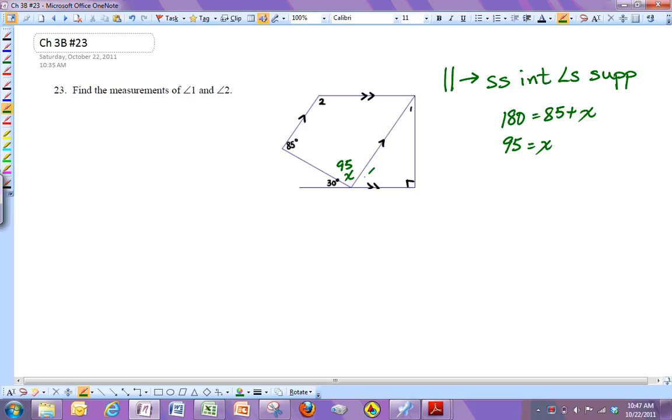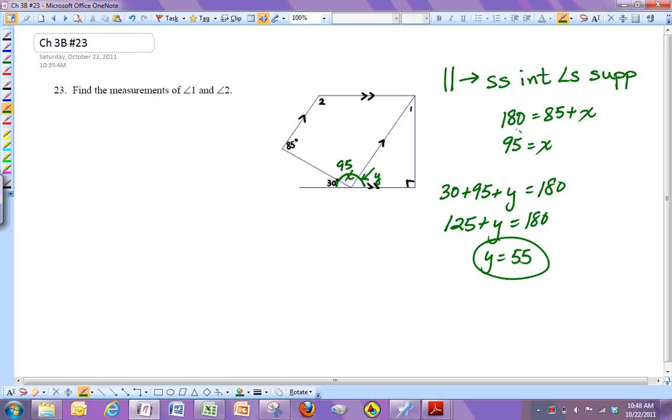So if we look right here, this angle combined with the 95 and the 30 is going to have to add up to 180 since it's a straight angle. So 30 plus 95 plus, I'll call this one y, equals 180. So this is going to be 125 plus y equals 180. So then y is going to be 55. So this angle right now is 55 right here.